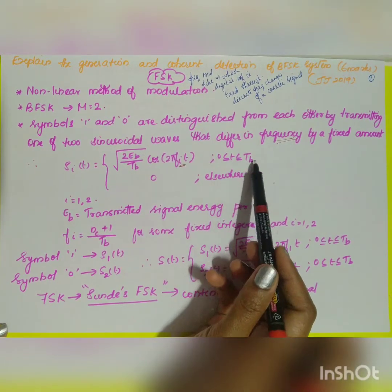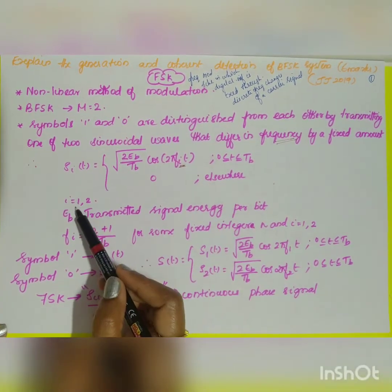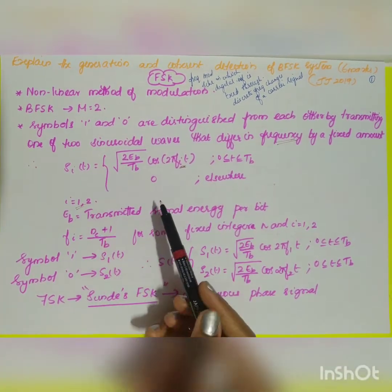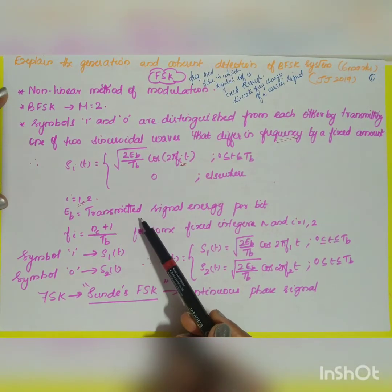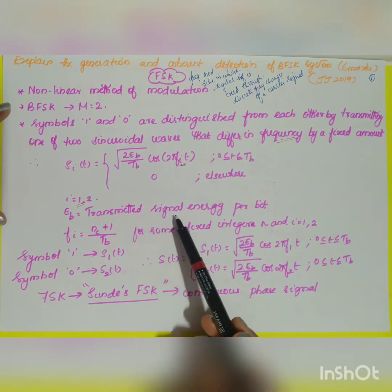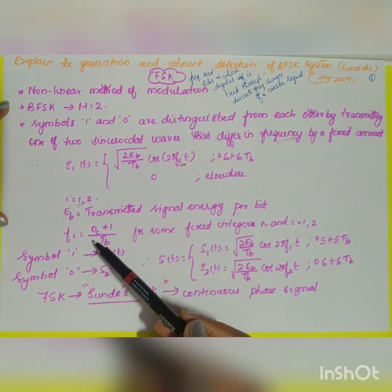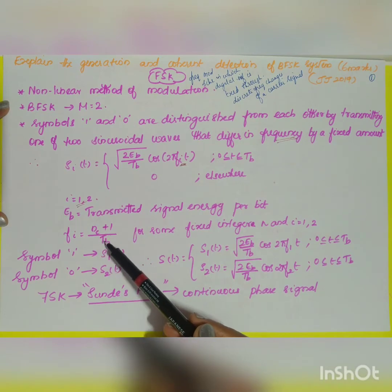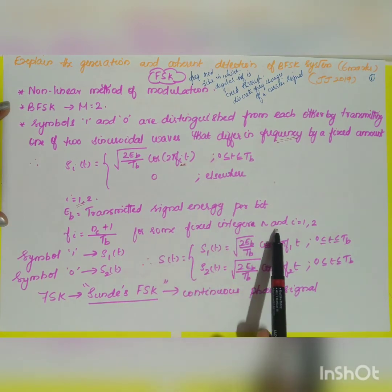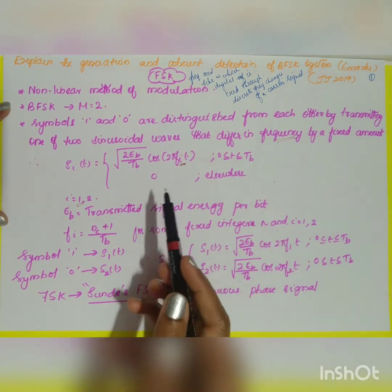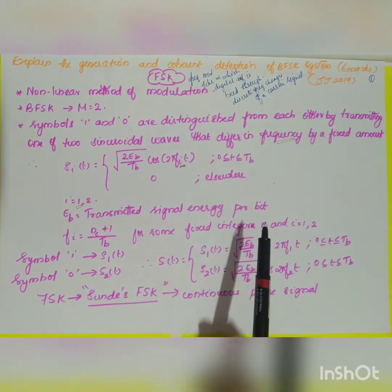The signal is defined over the interval 0 to T_b and is zero elsewhere, where i = 1, 2. Here, E_b is the transmitted signal energy per bit, and f_i = (n_c + i) / T_b for some fixed integer n_c, with i = 1, 2.